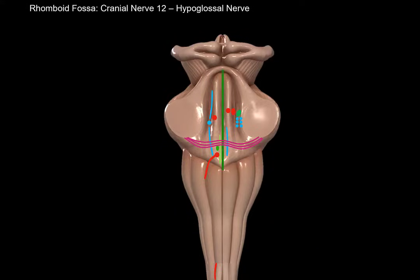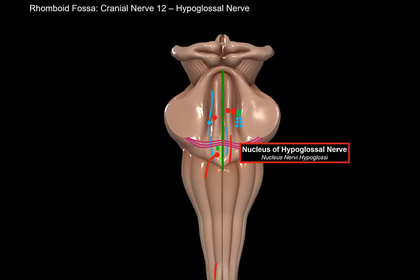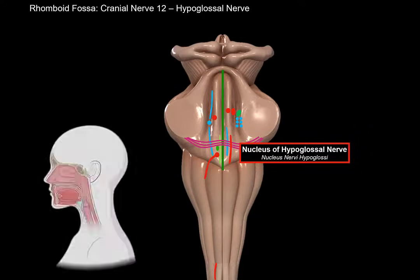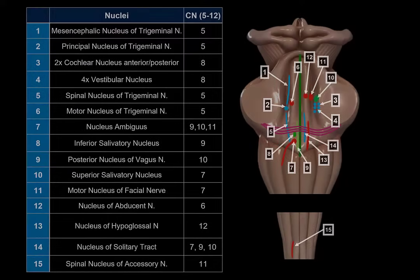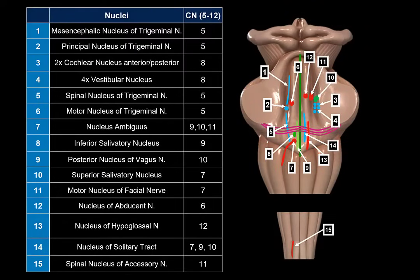The last nerve is the 12th cranial nerve, the hypoglossal nerve. It is a motor nerve whose fibers come from the nucleus of the hypoglossal nerve. These motor fibers go to the tongue and innervate all the muscles of the tongue. Here, all the nuclei of the rhomboid fossa are shown with the corresponding cranial nerves that synapse with them.